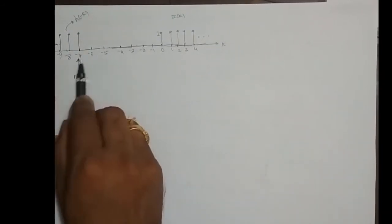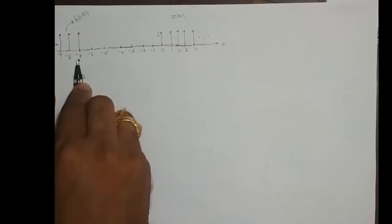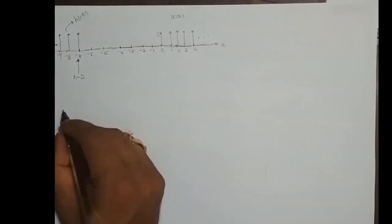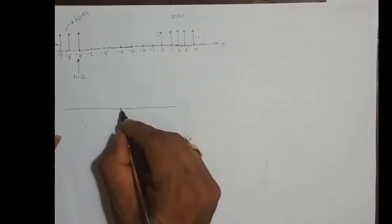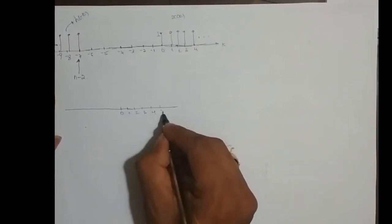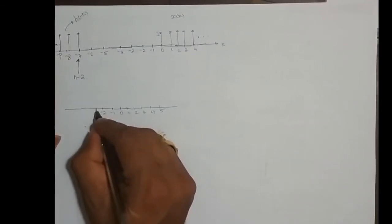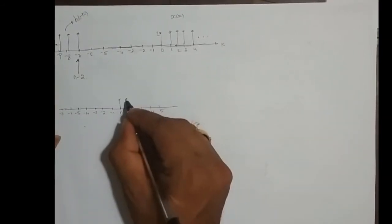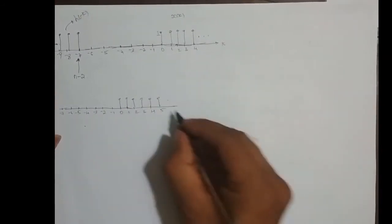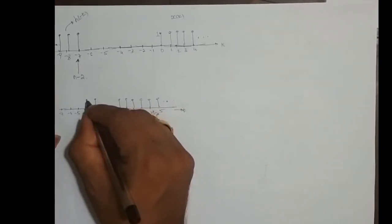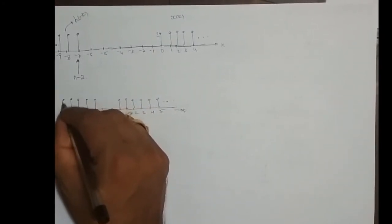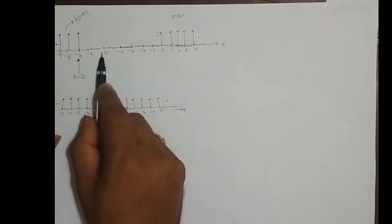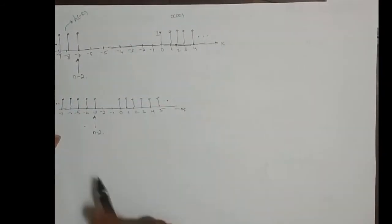I continue moving the slider further right — from minus 7 to minus 6, minus 5, minus 4, minus 3. I bring the slider n minus 2 to minus 3. The first sequence x[k] and the second sequence h[-k] are plotted together. I move further right and bring it to minus 3, still no overlap.